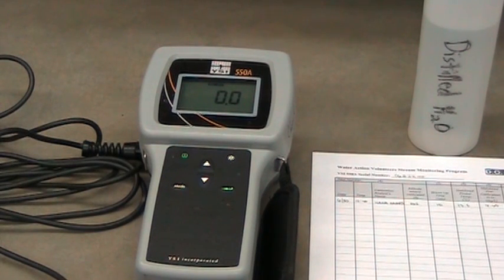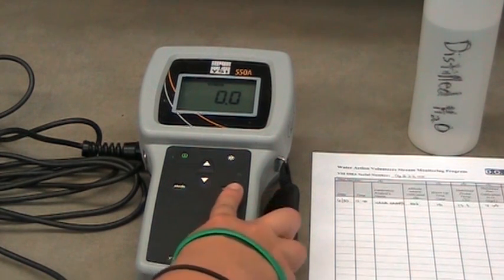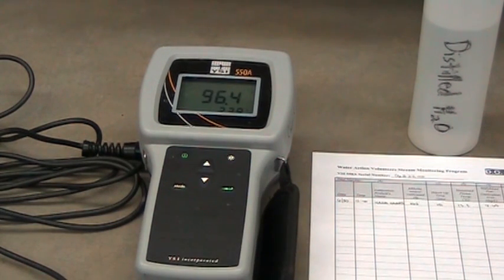The salinity of the sample will appear on screen. Press enter again to accept zero salinity as we are testing fresh water. The calibrated percent saturation should now appear on the screen and the CAL in the lower left-hand corner should have disappeared.